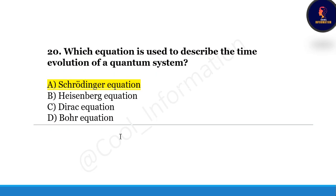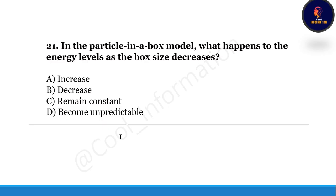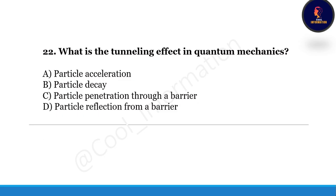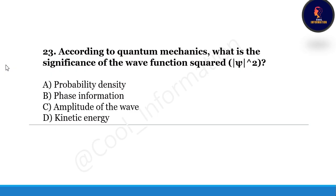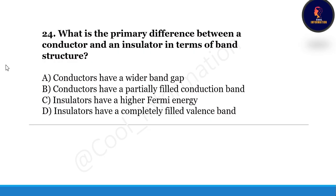Next question: in the particle-in-a-box model, what happens to the energy levels as the box size decreases — they increase, decrease, remain constant, or become unpredictable? Correct option is A, they increase. Next question: what is the tunneling effect in quantum mechanics — particle acceleration, particle decay, particle penetration through a barrier, or particle reflection from a barrier? Correct option is C, particle penetration through a barrier. Next question: according to quantum mechanics, what is the significance of a wave function squared — probability density, phase information, amplitude of the wave, or kinetic energy? Correct option is A, probability density.